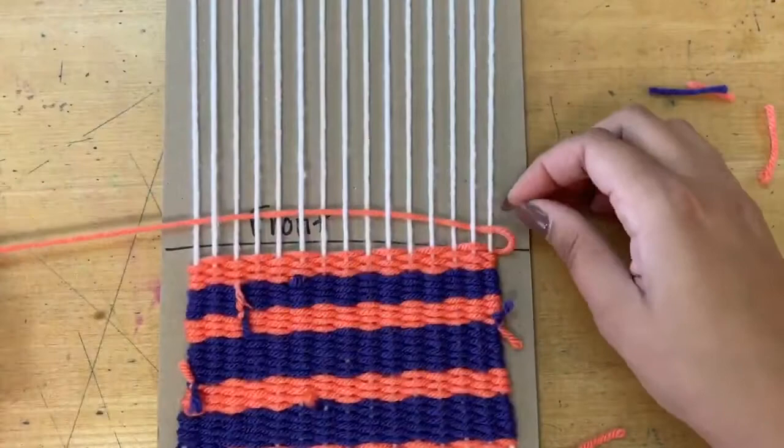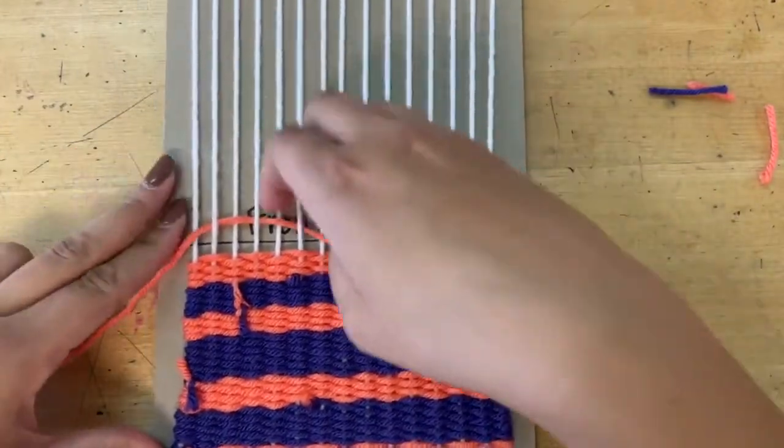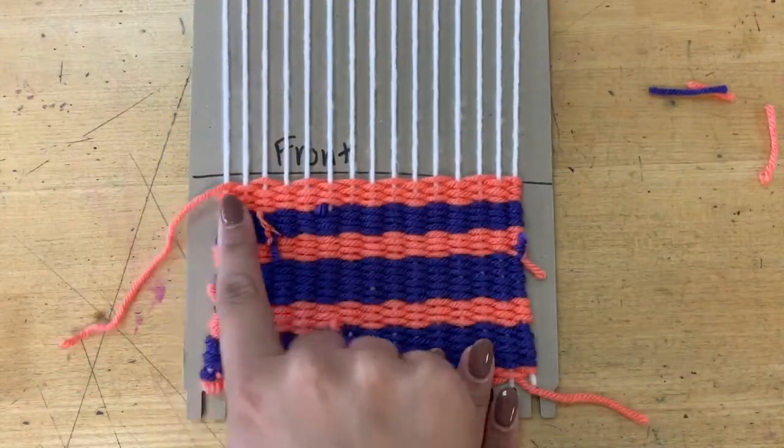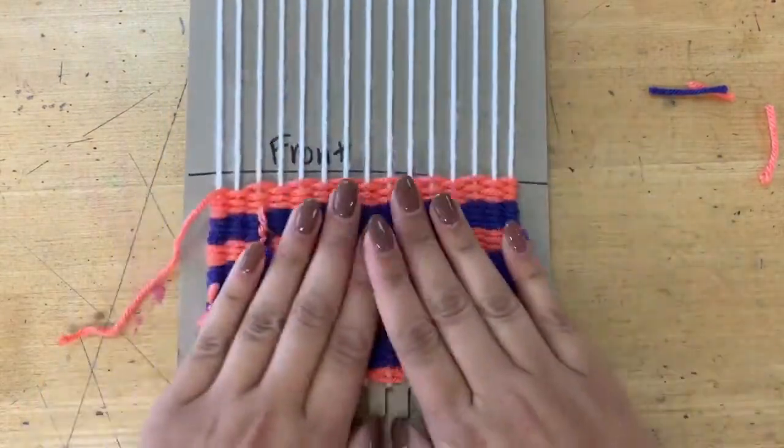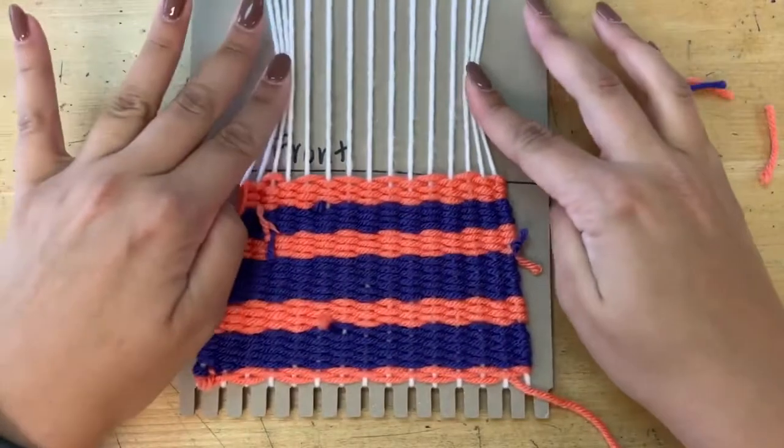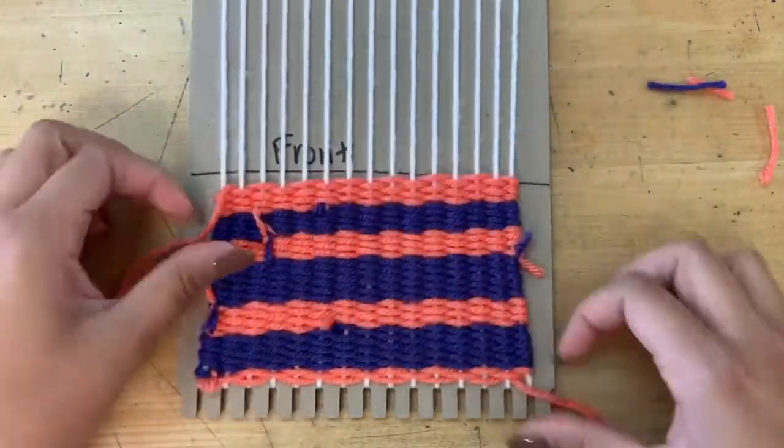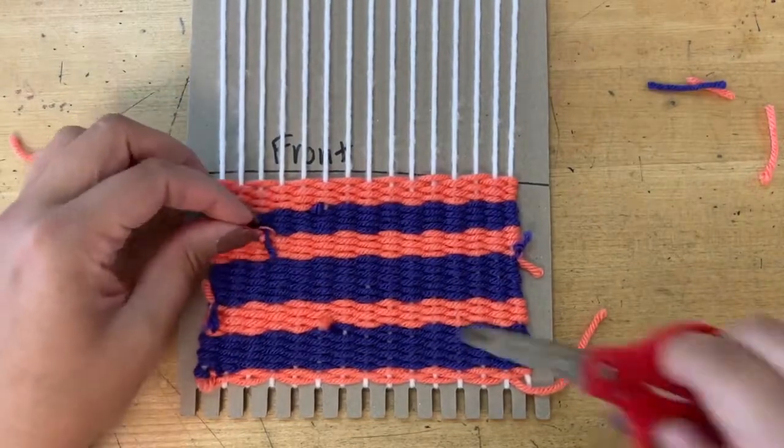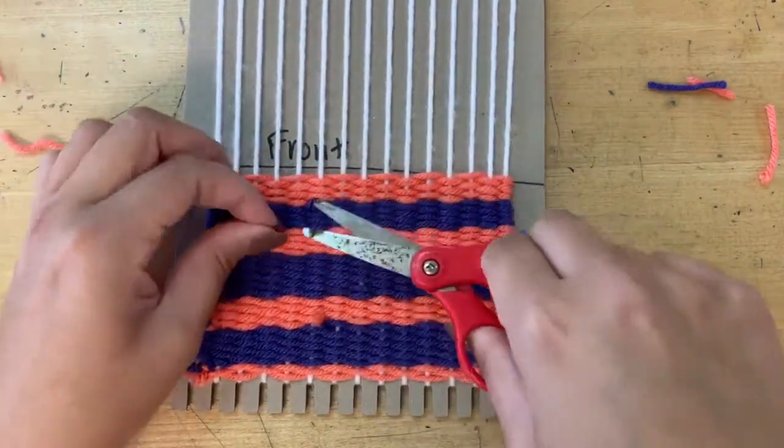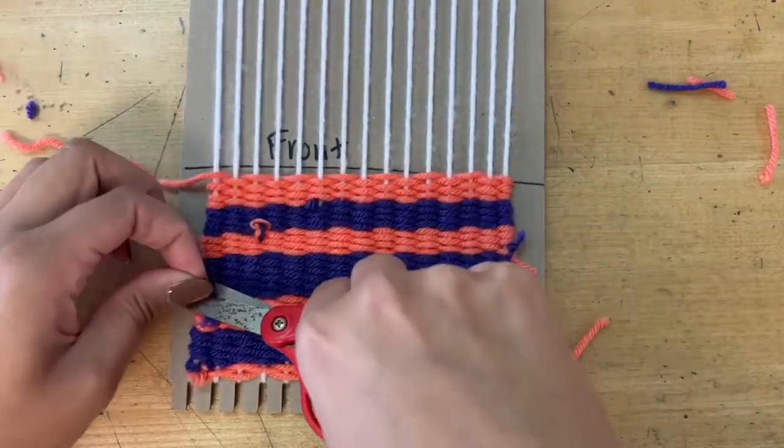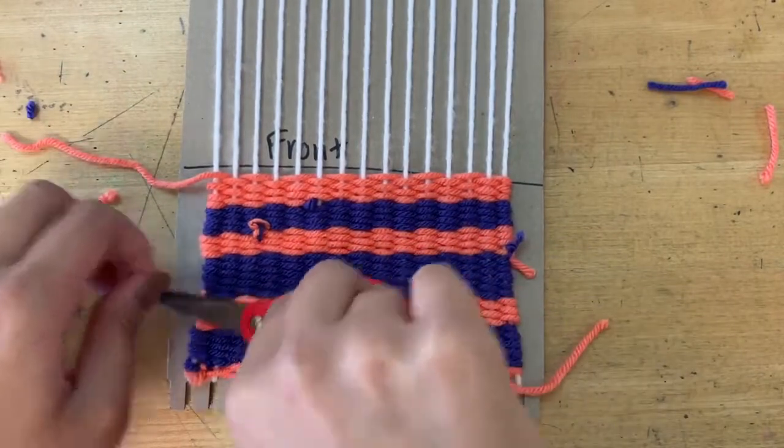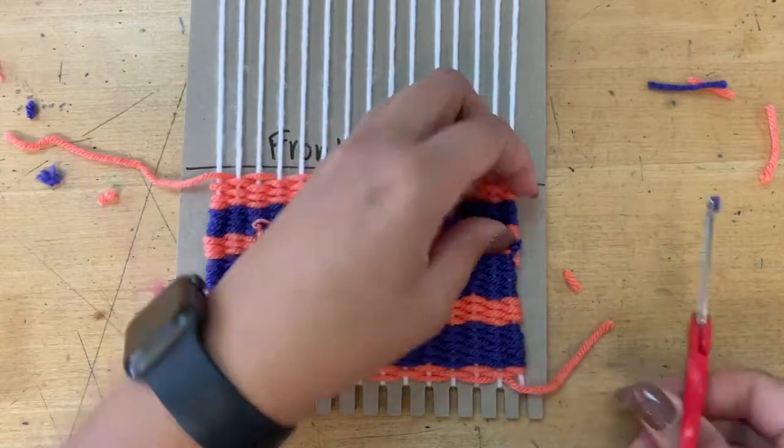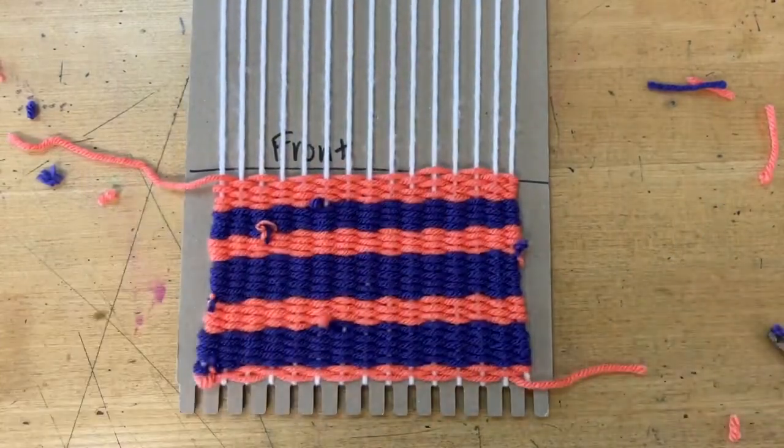All righty. My weaving and my loom is at a pretty good spot. You are going to stop when you reach this front line here. Make sure that your loom is not bowing in like this and there are no mistakes. I've got a couple dangly strings. If you want to just trim those before you take your weaving off your loom, you can just to tighten it up and make it look a little bit neater. And just like that, she's finished.